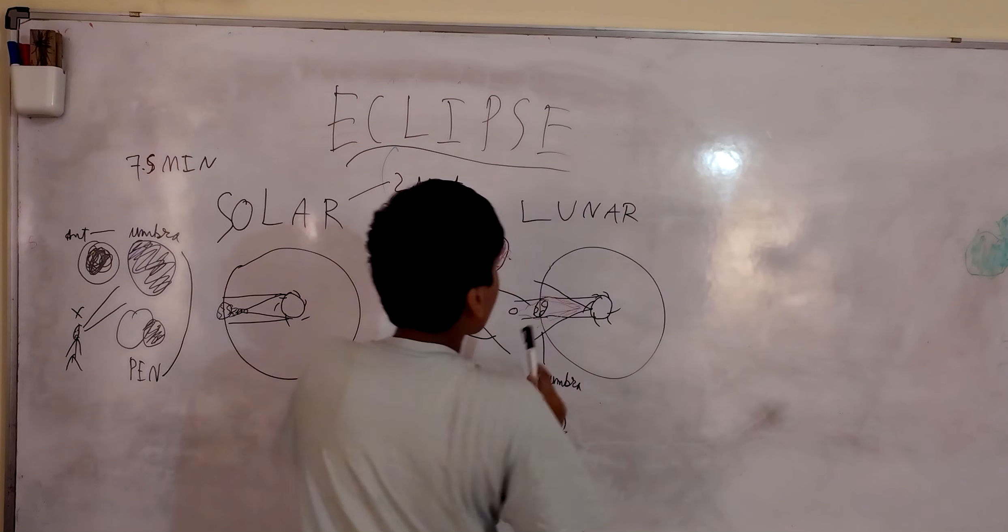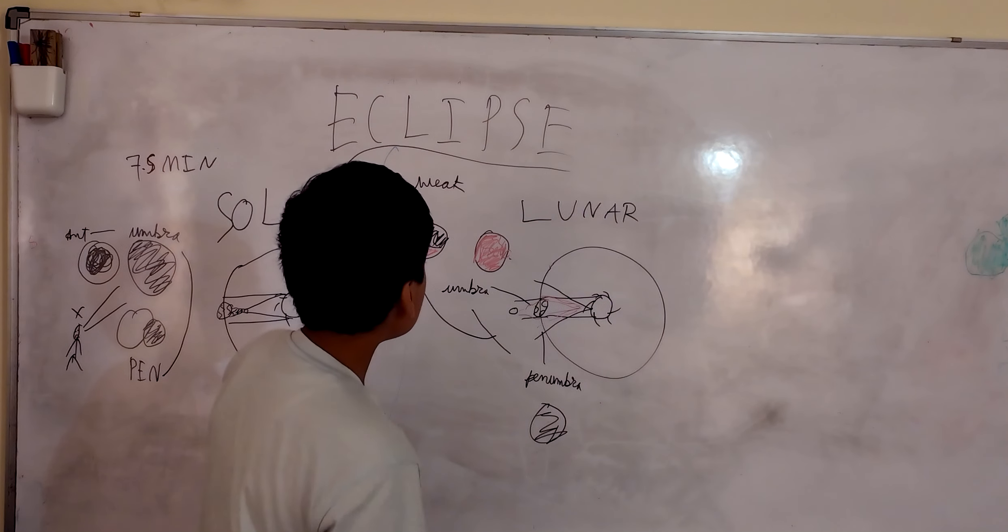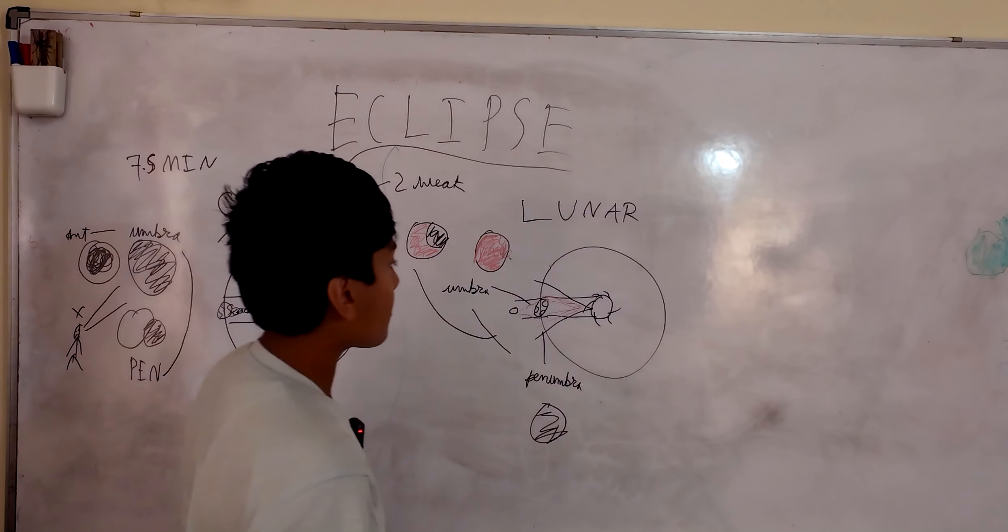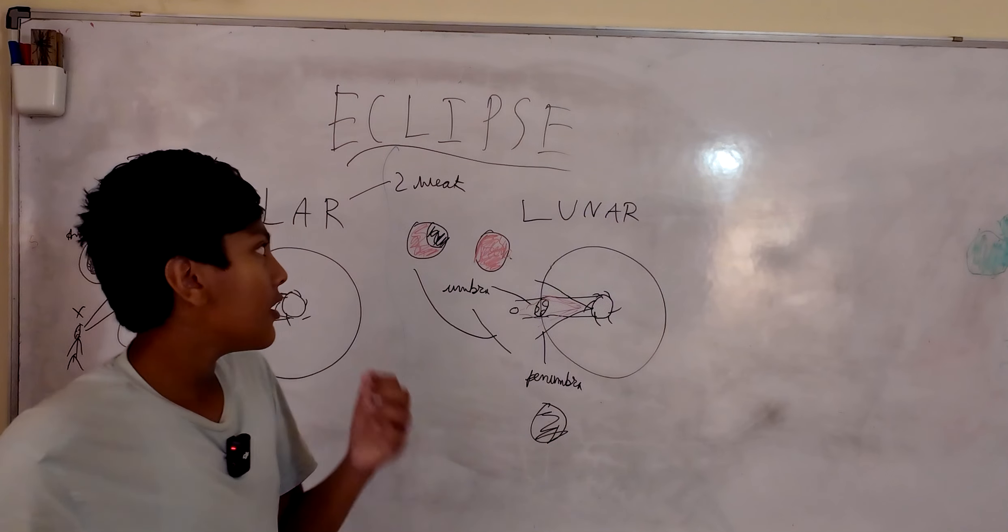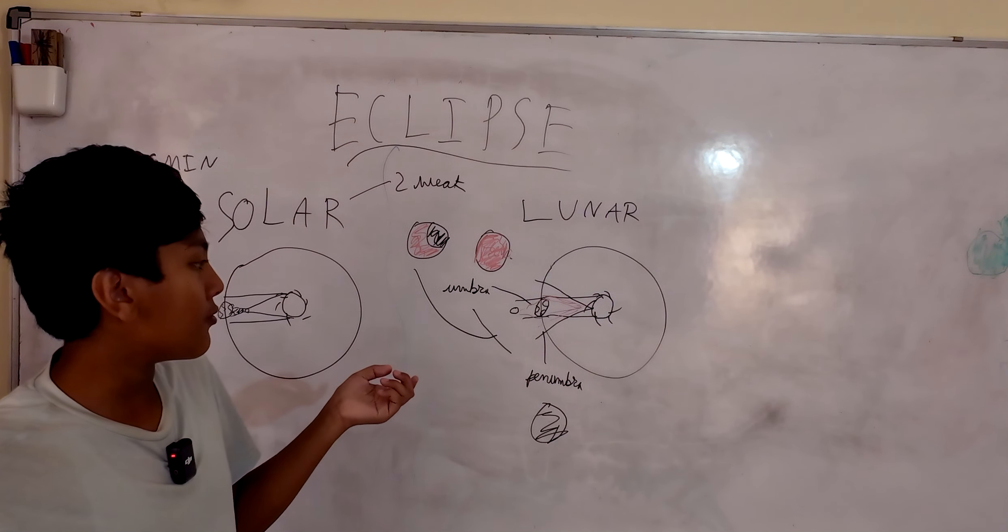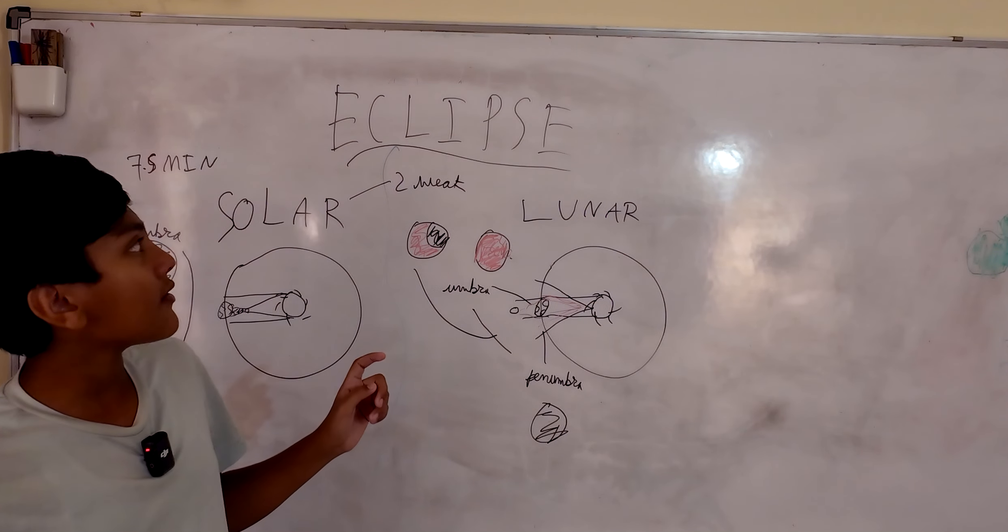And that's basically what a solar eclipse is. Now what about a lunar eclipse? A lunar eclipse happens when the earth is blocking the light from the sun to the moon, so that way now there's no light in the moon area.